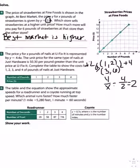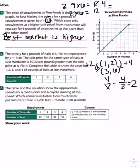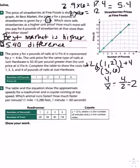The second question asks, how much more will you pay for 6 pounds of strawberries at that store than the other store? So at Best Market, 6 pounds is going to be 2.9 times 6, which is 17.4. And at Fine Foods, it would be 2 times 6, which is 12. So 17.4 minus 12 gives me a difference of 5.4. $5.40 difference.